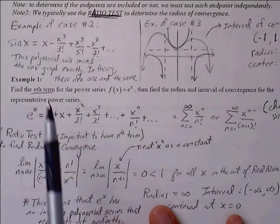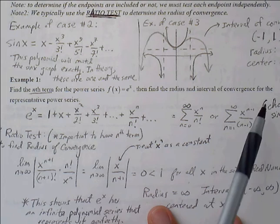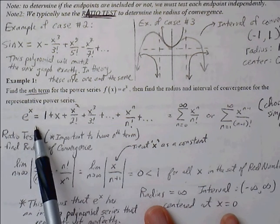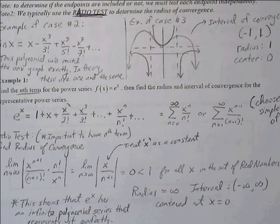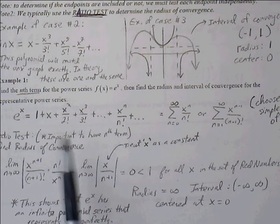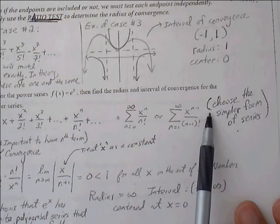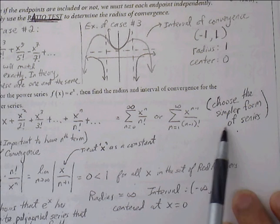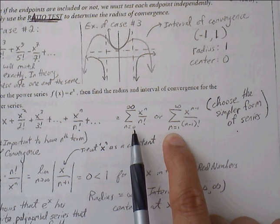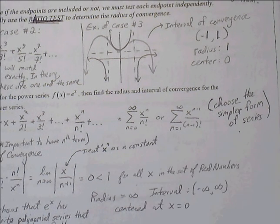Example one: find the nth term for the power series of f of x equals e to the x, then find the radius and interval of convergence. The power series for e to the x is: 1 plus x plus x squared over 2 factorial, plus x cubed over 3 factorial, and so on. The rule of sequence is given by x to the n over n factorial. We could also write it as x to the n minus 1 over n minus 1 factorial, but we typically choose the simpler form and may adjust the starting n value to get the cleanest rule of sequence.